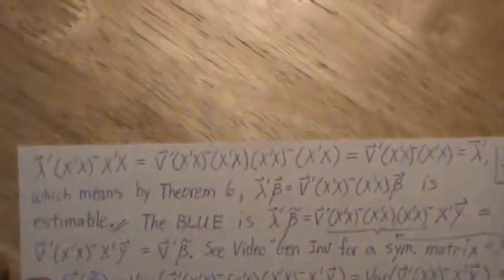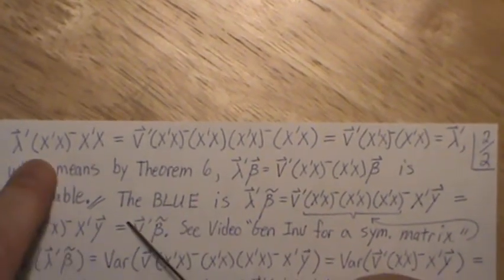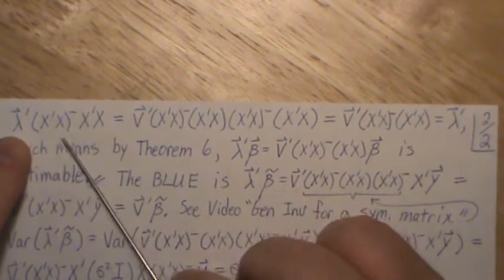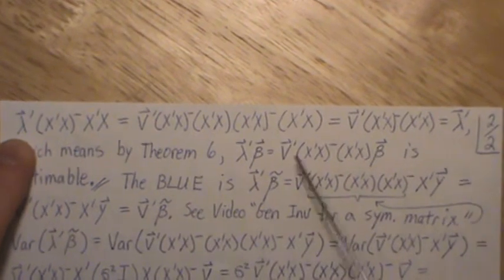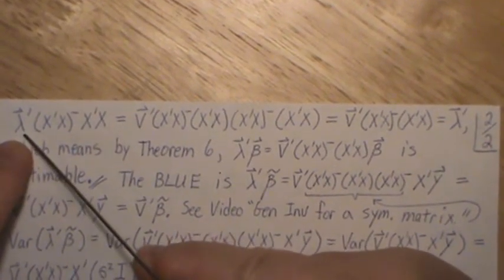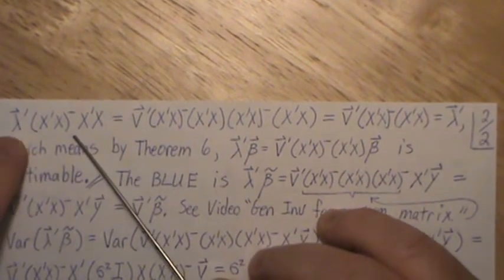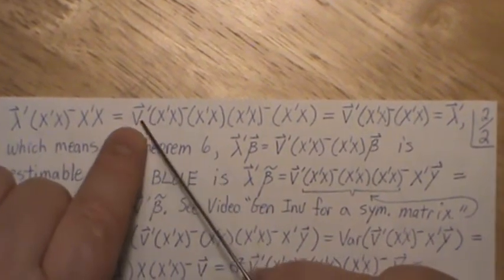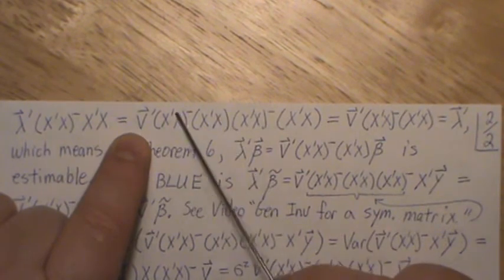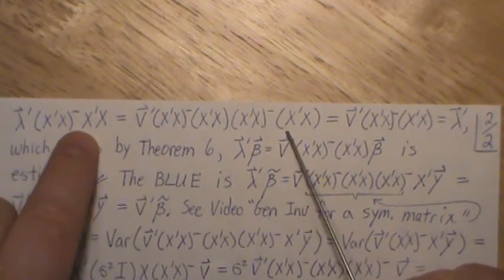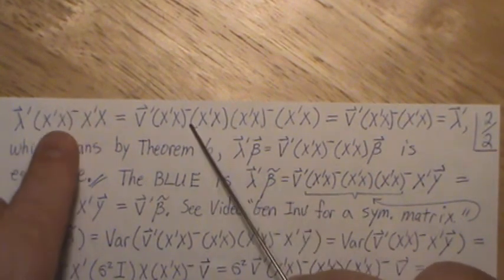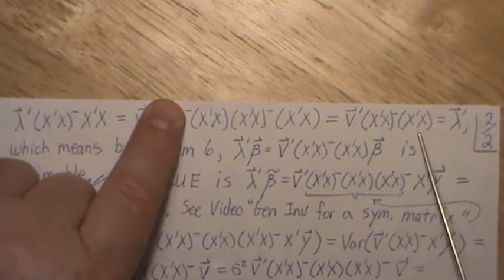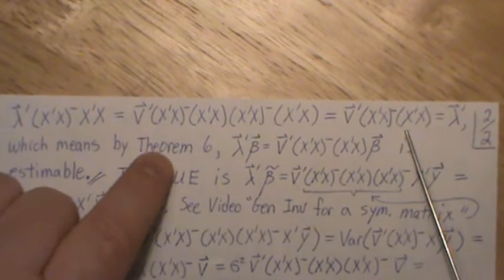So now let's prove it. First, we want to use theorem six, which says if we take the lambda times this, and if we get lambda back, then that combination of lambda prime beta is estimable. So what we do is stick in the proposed lambda, which is this right here. So it's any P by one vector times this. Now this piece over here is the extra matrix that we're multiplying by. But since it's a generalized inverse, this is X prime X.